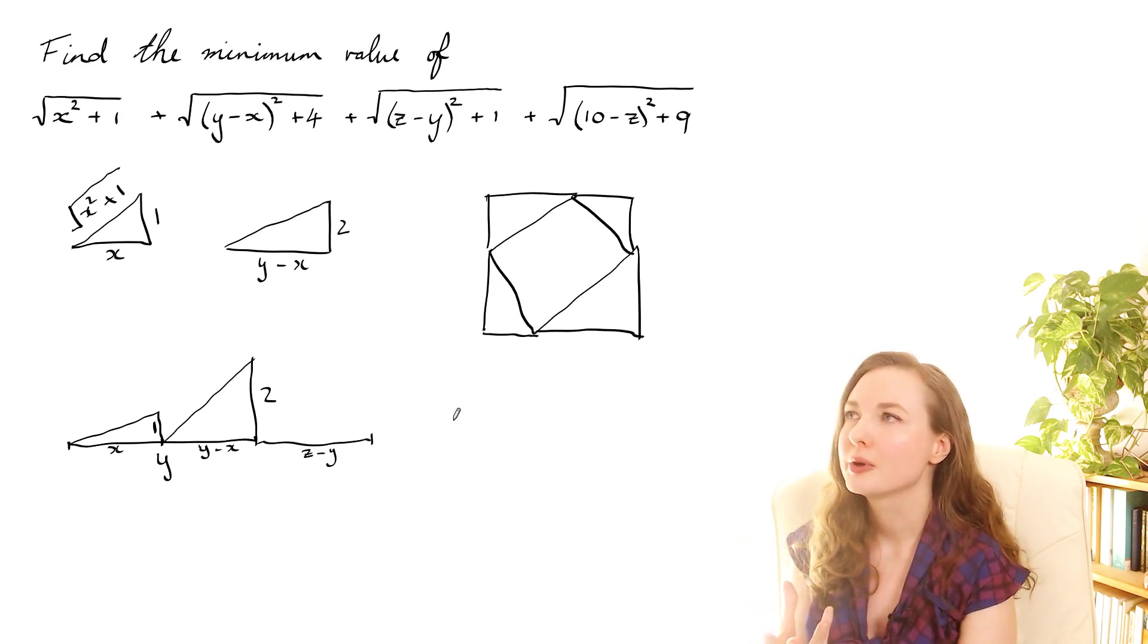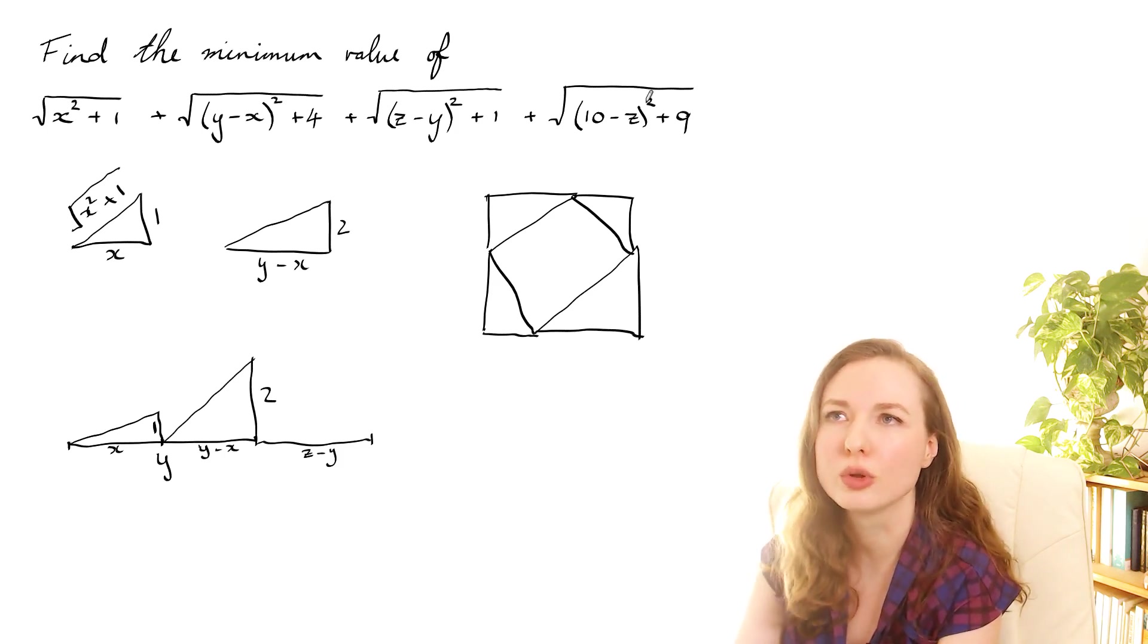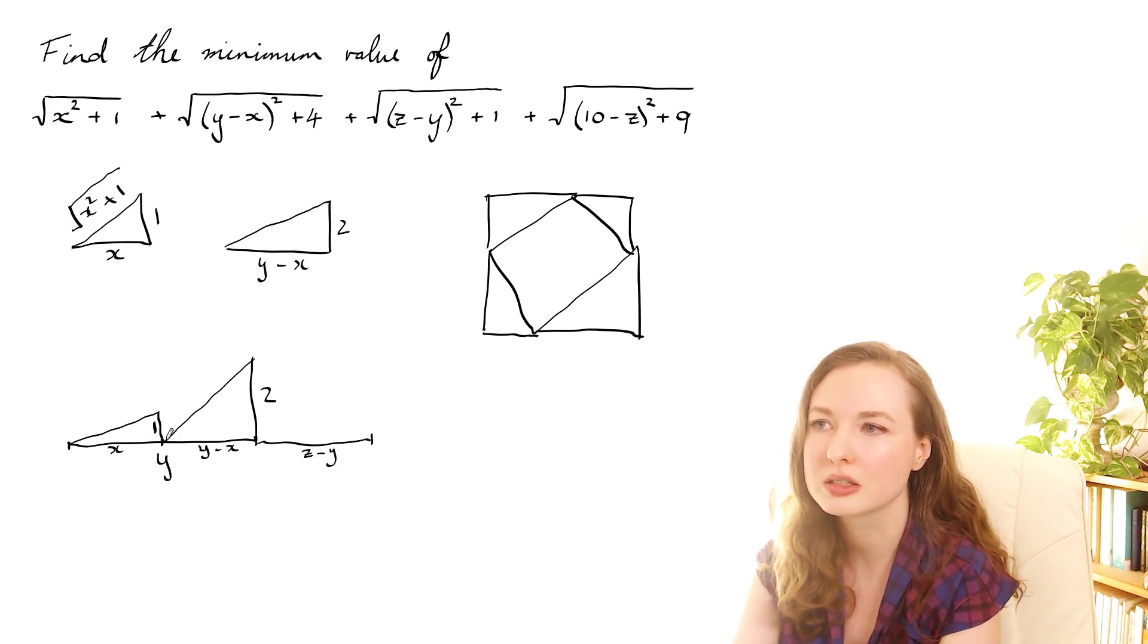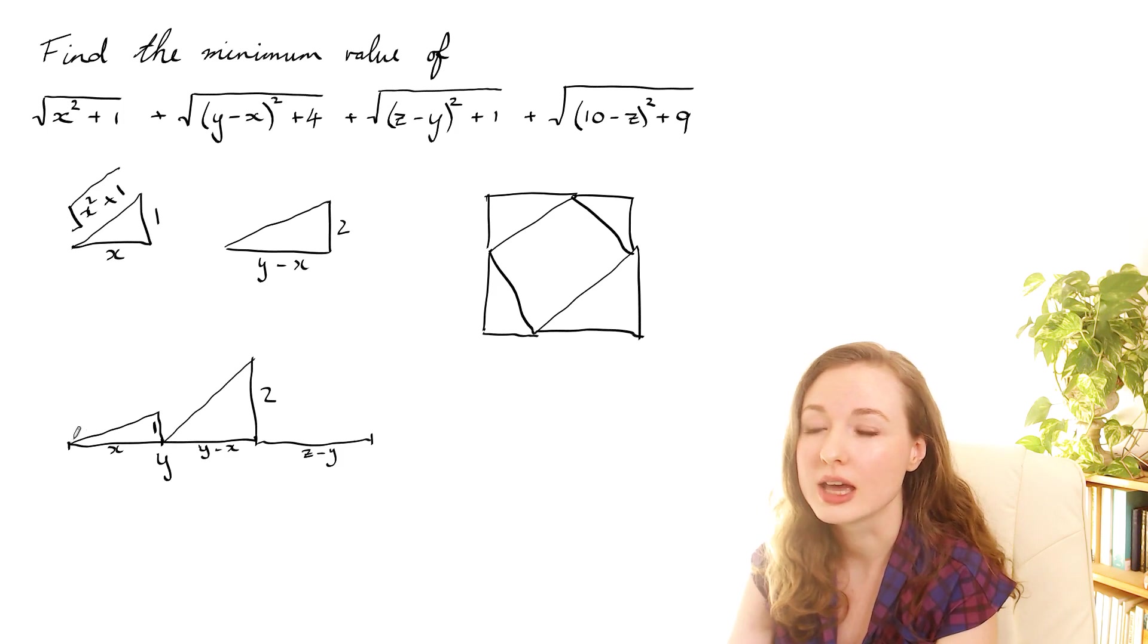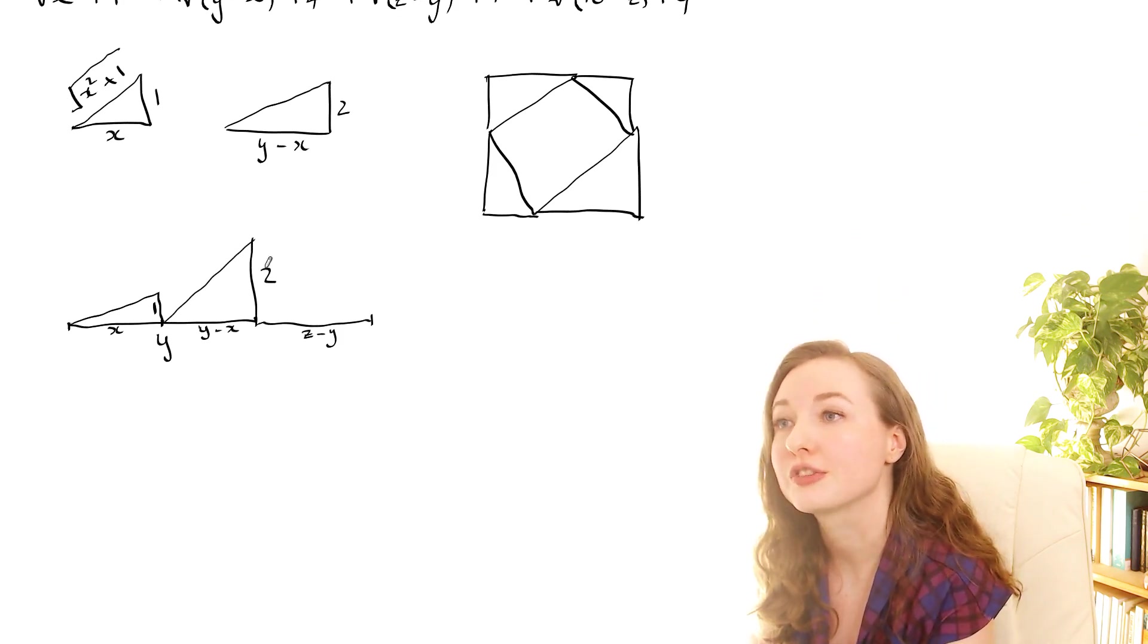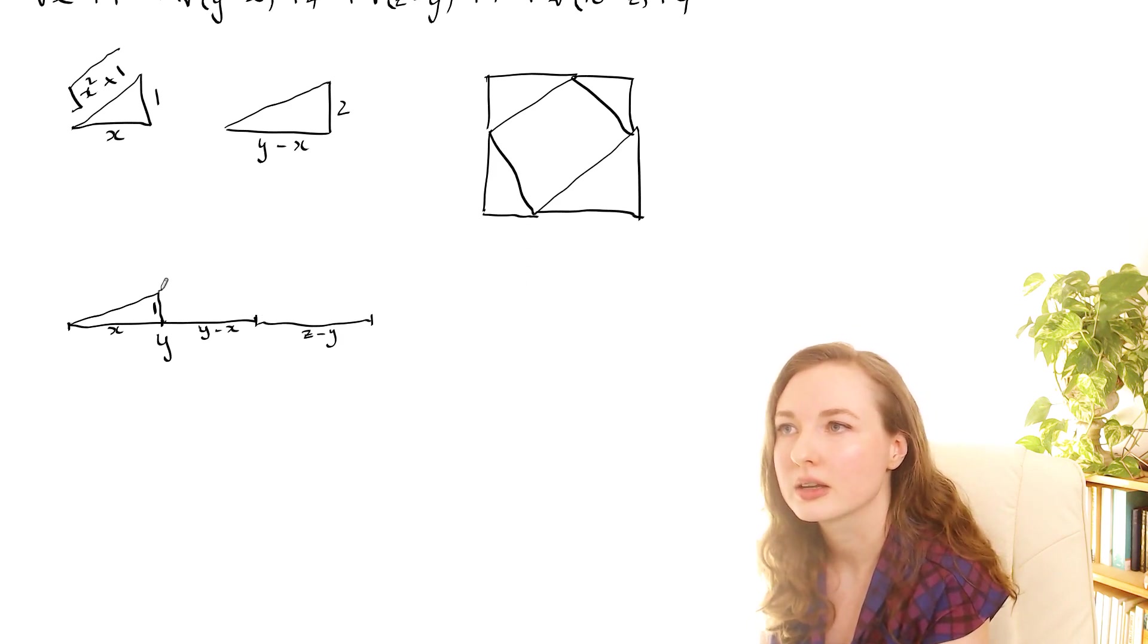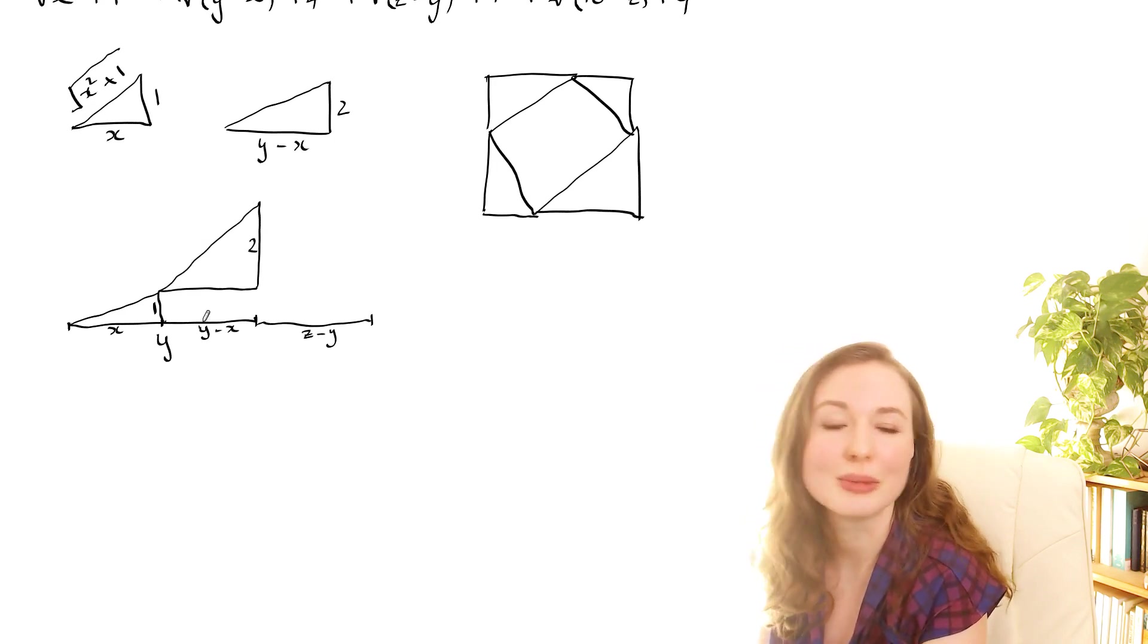So I drew that up and then that wasn't really helpful because what we want is to find the sum of all of these. So really what I want is for this one to start where this one ends because then the sum of these two will be the distance traveling along there. So then what I did was I decided to shift this triangle up. So instead of starting it on this line let's put it there. So now we've got the 2 there, that distance is y minus x and now this is the square root of y minus x squared plus 2 squared.